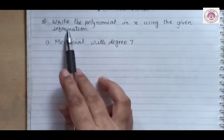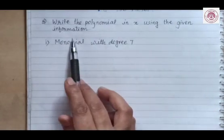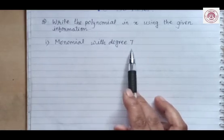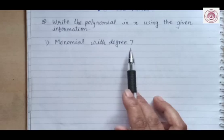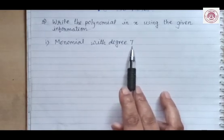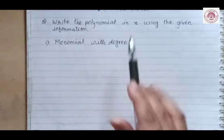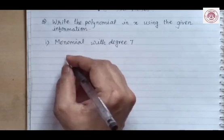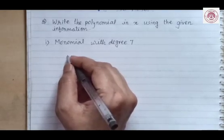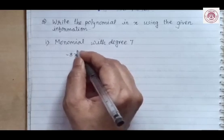Let's solve question number 3: write the polynomial in x using the given information. The first question is a monomial with degree 7. Monomial means a polynomial with one term and its degree should be 7, using variable x. You can write any, but there should be only one term. For example, negative 8x raised to power 7.